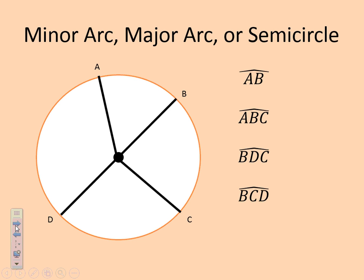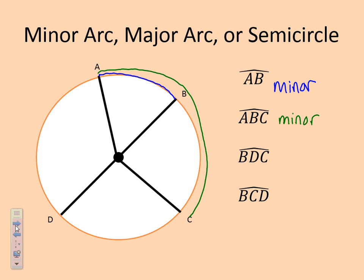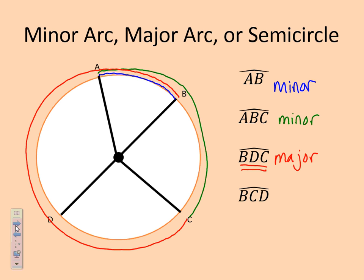Minor arcs, major arcs, or semicircle — let's make sure we have that vocabulary under control. We have A to B curved above, so we're going the shortest distance from A to B — that's a minor arc. A to B to C is still a minor arc because we're going less than halfway around the circle. B to D to C, going all the way around, switches to major because that's more than half of the circle. B to C to D is exactly half of the circle, so that's a semicircle.